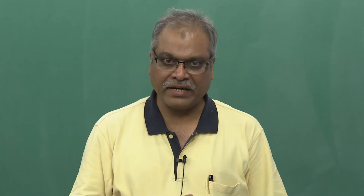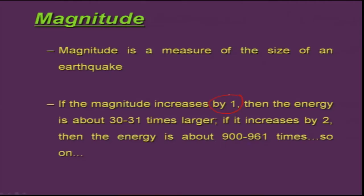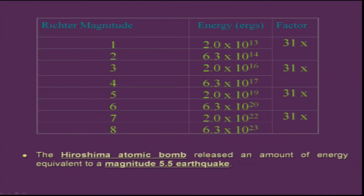If the magnitude increases by two, the energy released is about 1000 times larger. The next magnitude earthquake multiplies by a factor of about 31. For example, the Hiroshima atomic bomb released energy equivalent to a magnitude 5.5 earthquake.